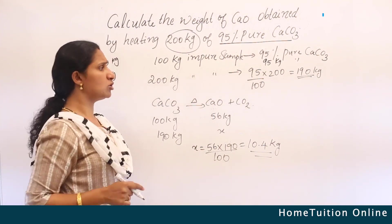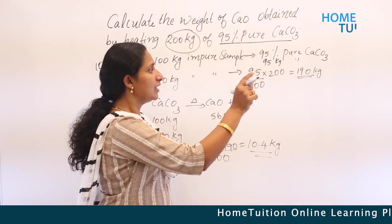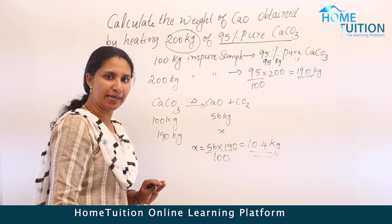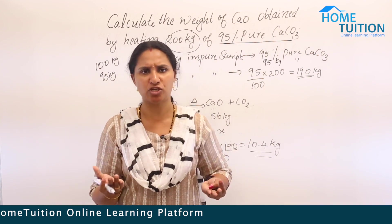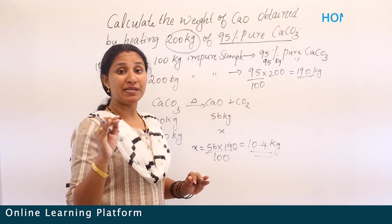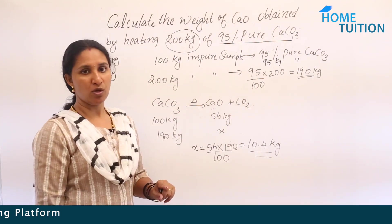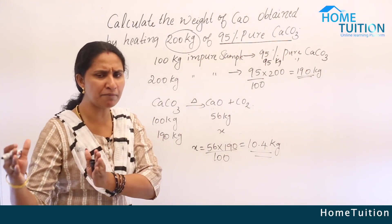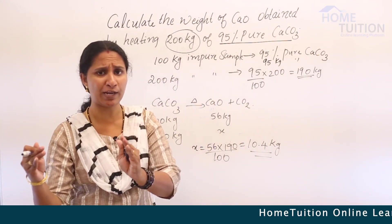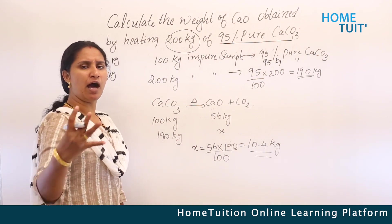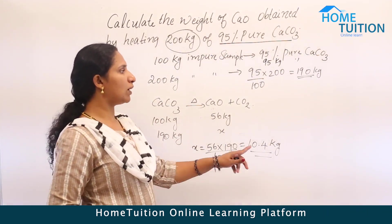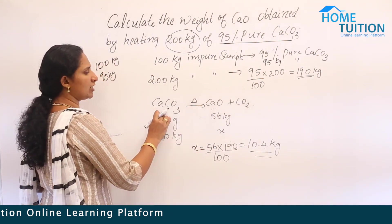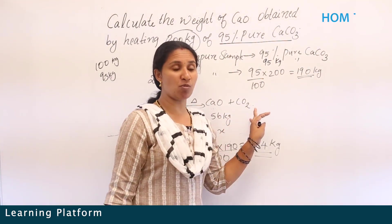We want to find the amount of calcium oxide from 190 kg of calcium carbonate. Writing the equation: CaCO3 on heating gives CaO + CO2. The molecular mass of CaCO3: calcium is 40, carbon is 12, three oxygens are 48, totaling 100.